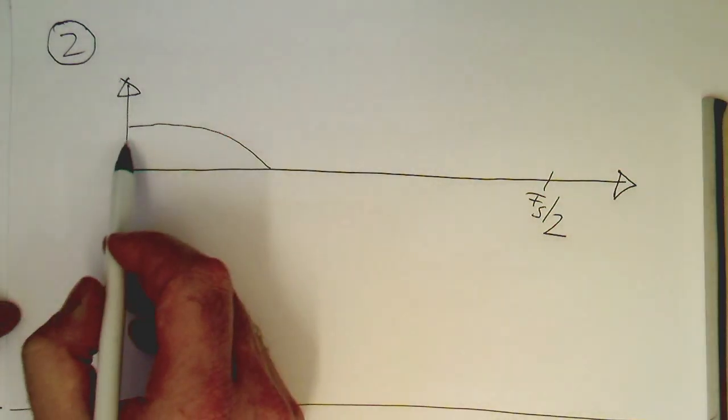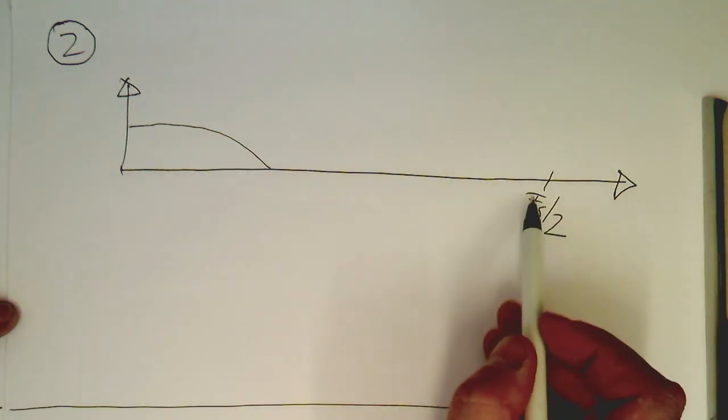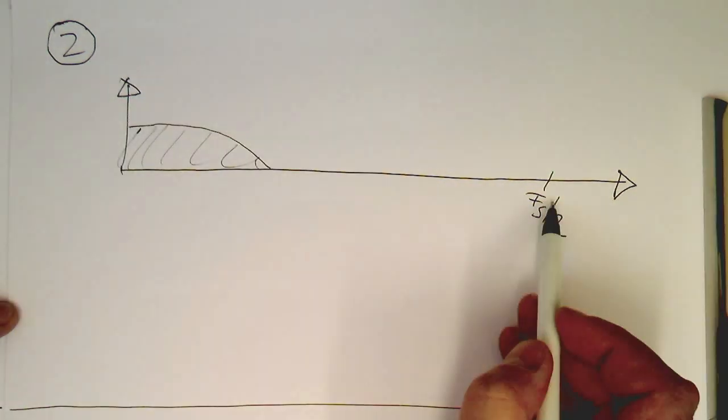So then obviously, if we do this like this, then we don't need any anti-alias filtering here, because the spectrum of our signal is never reaching fs half.